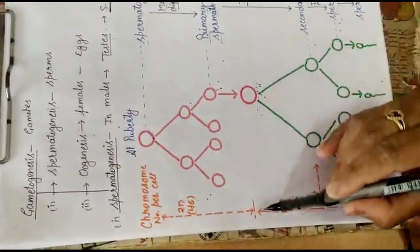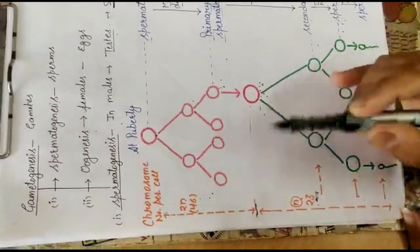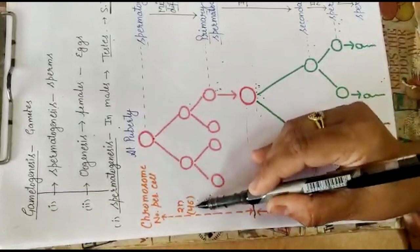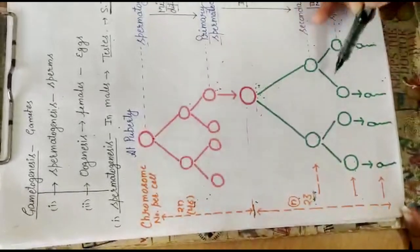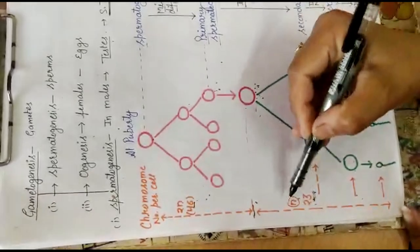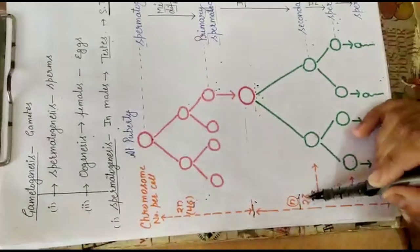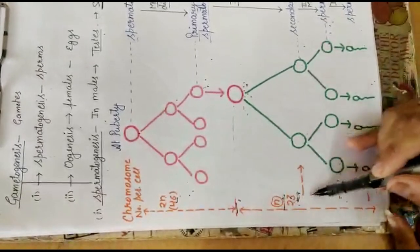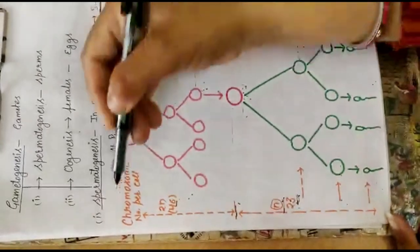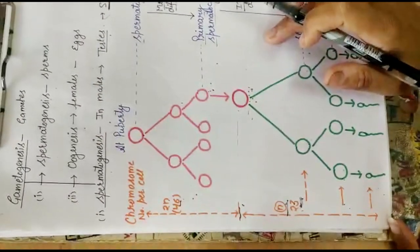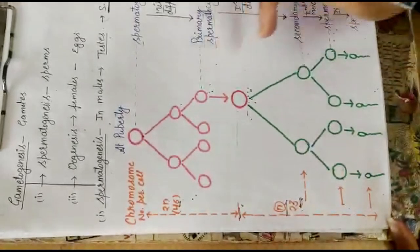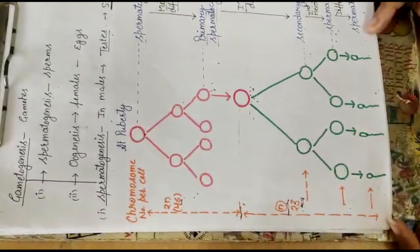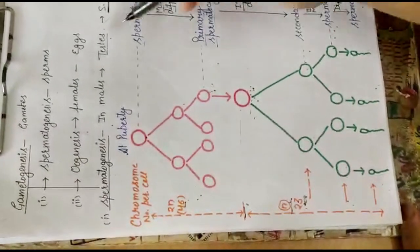Regarding the ploidy levels during spermatogenesis: up to and including the primary spermatocyte, all cells are diploid with 46 chromosomes. After meiosis, the number of chromosomes becomes half, so the secondary spermatocytes, spermatids, and spermatozoa are all haploid. This summarizes the ploidy levels at all stages during spermatogenesis, completing the description of sperm formation in the testis.